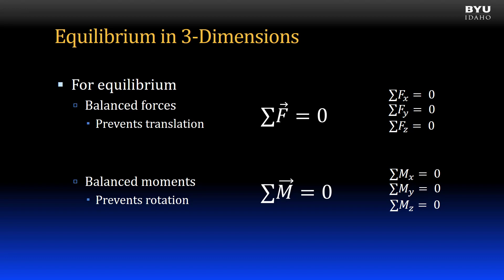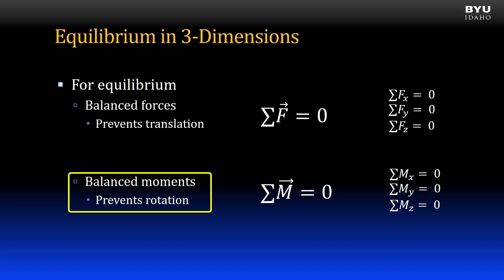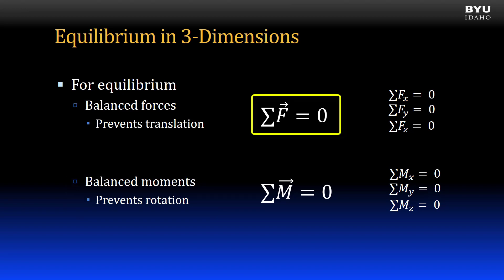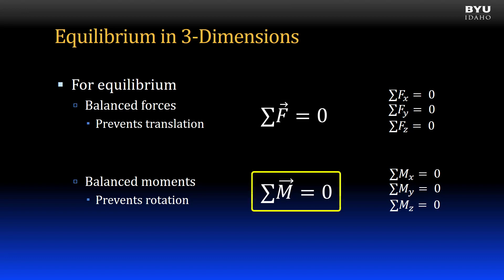The basic principles are still the same. For static equilibrium of a rigid body, all forces must be balanced to prevent translation of the member, and all moments must be balanced to prevent rotation of the member. In other words, all the forces — both applied forces and reaction forces — must sum to zero. And all applied moments and reaction moments, when summed about any arbitrary point, must sum to zero.